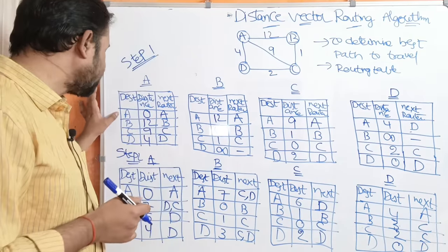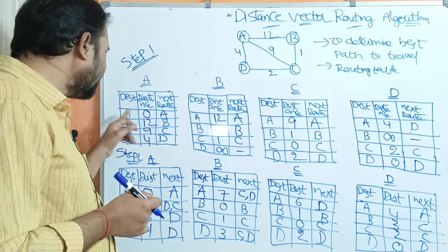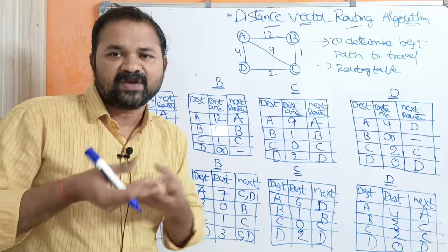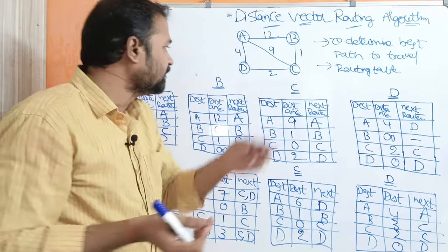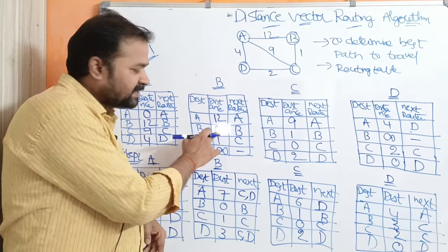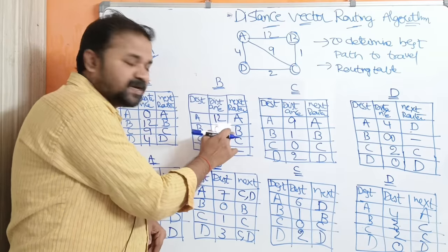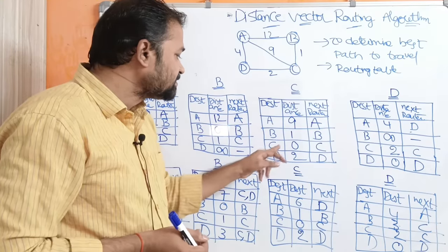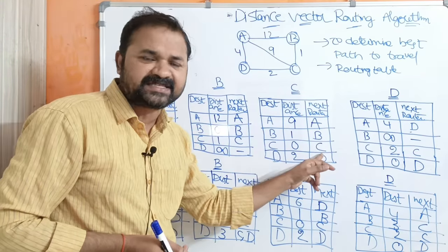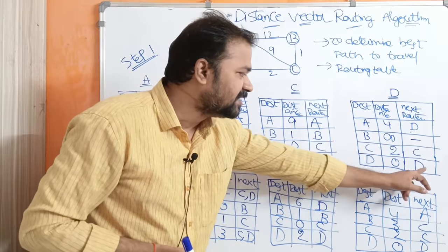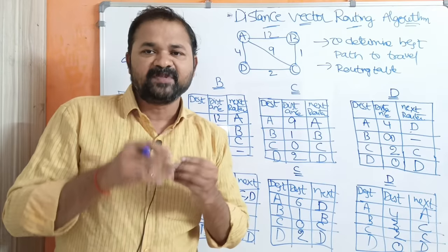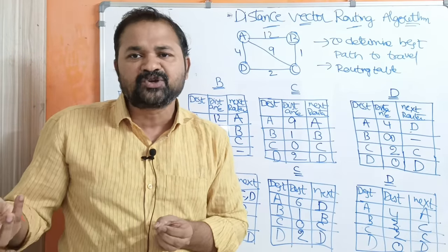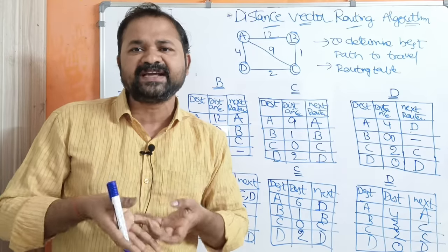The possible destinations are A, B, C, D. For A to A, distance is 0 and the next router to visit is A, because source and destination are the same. Likewise, B to B distance is 0 and next router is B; C to C distance is 0 and next router is C; D to D distance is 0 and next router is D. If the source router and destination router are the same, then the distance is 0 and the next router to visit is that router itself.